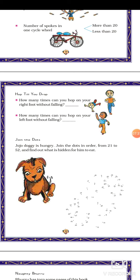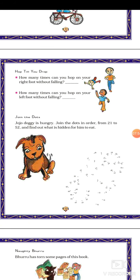And then again join the dots. Jojo the doggie is hungry. Join the dots in order from 21 to 52 and find out what is hidden for him to eat. You start from dot number 1, 2, 3, up to dot number 52. Join all the dots and then you'll see Jojo doggie will find his food.